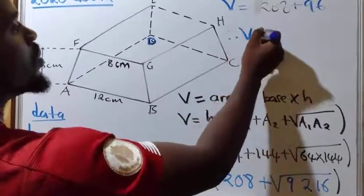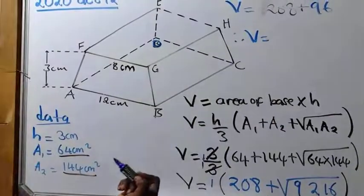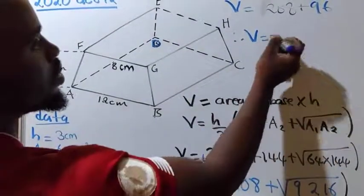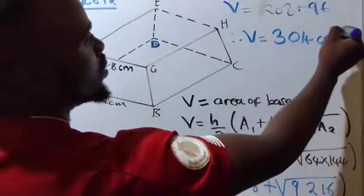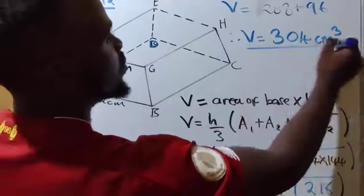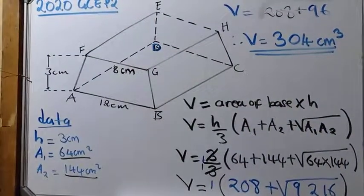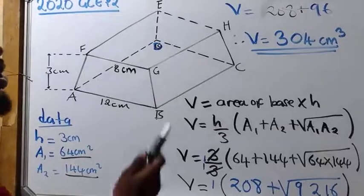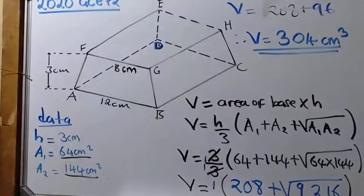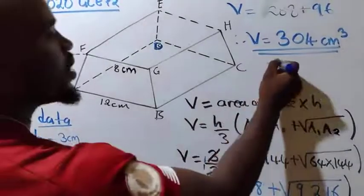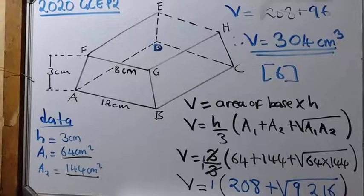Therefore, the volume of this frustum is going to be what? When you get your calculator there, you punch. This plus this is going to give you 304 cubed centimeter. So when you are finding volume on the units, don't forget to put in 3 cubed. So this is the volume of this frustum. And remember, in an exam, this question carries 6 marks. So you can't afford to miss the 6 marks.